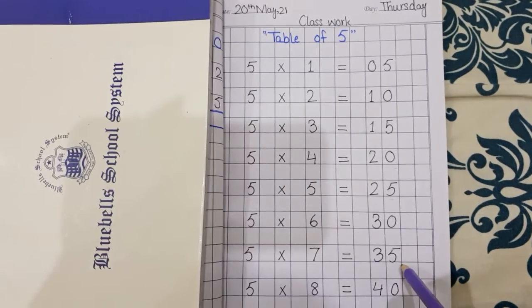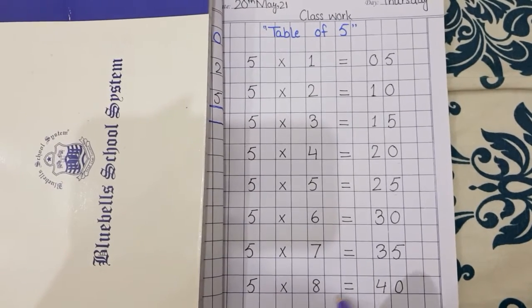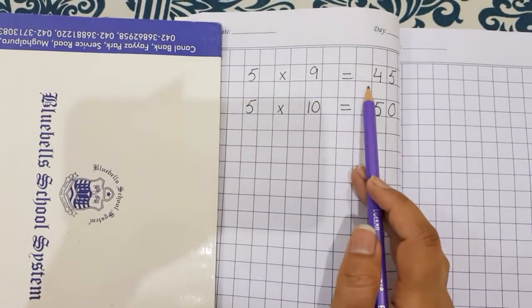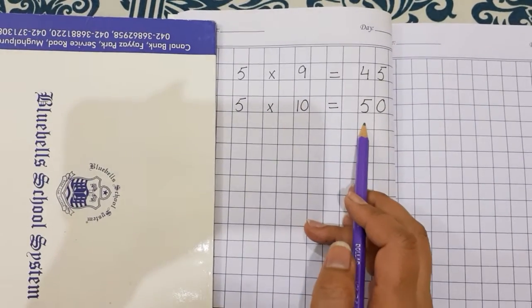5 times 7 is 35. 5 times 8 is 40. 5 times 9 is 45. 5 times 10 is 50.